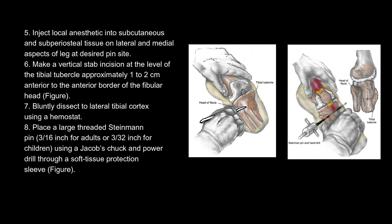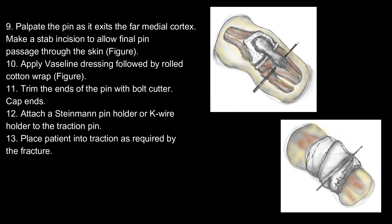7. Bluntly dissect to the lateral tibial cortex using a hemostat. 8. Place a large threaded Steinmann pin — 3/16 inch for adults or 3/32 inch for children — using a Jacobs chuck and power drill through a soft tissue protection sleeve. 9. Palpate the pin as it exits the far medial cortex; make a stab incision to allow final pin passage through the skin. 10. Apply Vaseline dressing followed by rolled cotton wrap. 11. Trim the ends of the pin with a bolt cutter and cap the ends. 12. Attach a Steinmann pin holder or K-wire holder to the traction pin. 13. Place the patient into traction as required by the fracture.